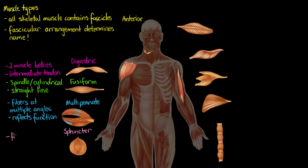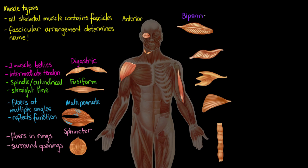The next type of muscle we're going to look at is called a sphincter, or a circular muscle. The fibers — the arrangement of the fascicles — are going to be in rings, and they usually surround openings in the body. A good example is the orbicularis oculi muscle around the eye.